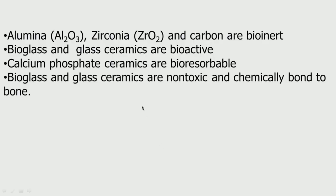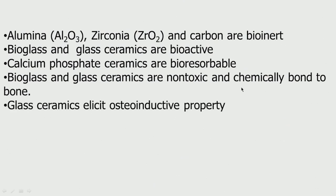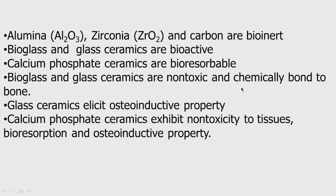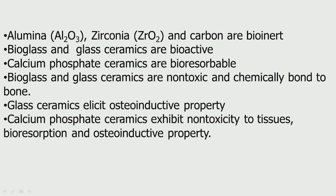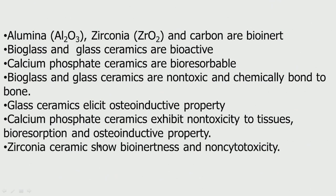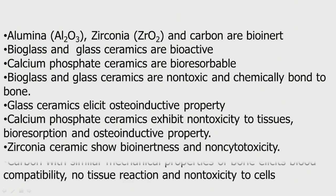That is the beauty of calcium phosphate — it can also be used for scaffolds and will get completely resorbed. Bioglass and glass ceramics are non-toxic and chemically bond to the bone. Glass ceramics could have osteoinductive property, meaning they allow cells to proliferate. Calcium phosphate ceramics exhibit non-toxicity to tissues, get bioresorbed, and also have osteoinductive property. Zirconia ceramics are bioinert and non-cytotoxic. Carbon is also used nowadays — it has good mechanical properties, elicits blood compatibility, no tissue reaction, and is non-toxic to cells.